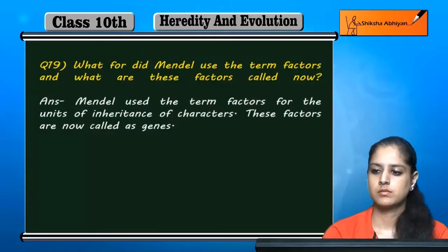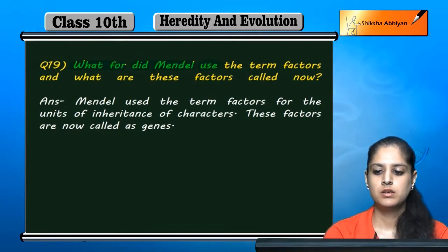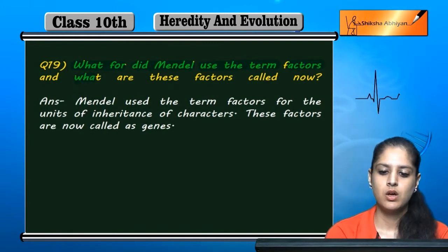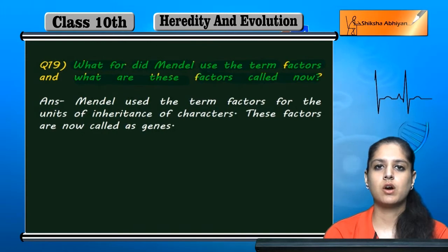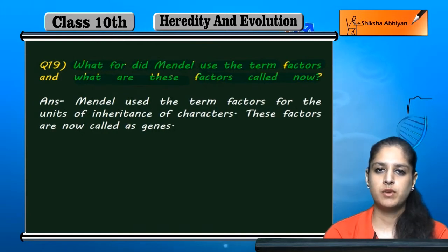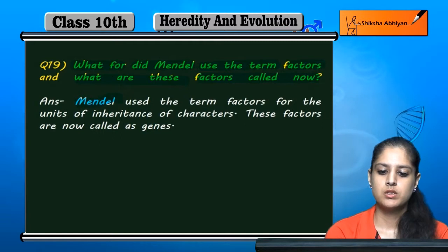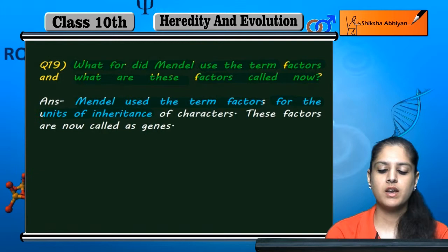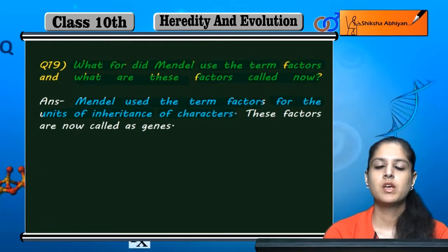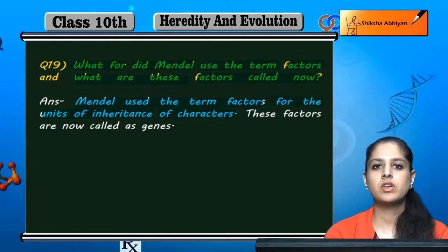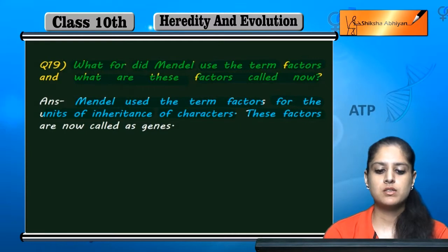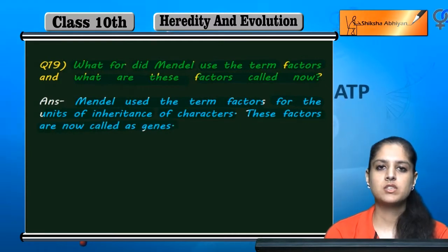Question 19: What for did Mendel use the term 'factors'? Mendel used the term factors to mean units of inheritance of characters — units which inherit characters and pass them from one generation to another. These factors are presently called genes.